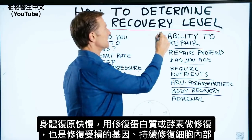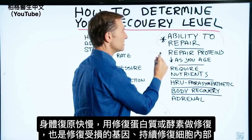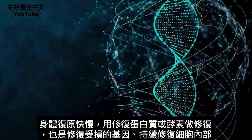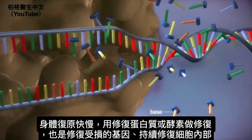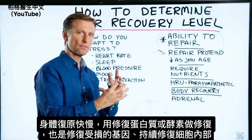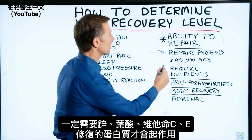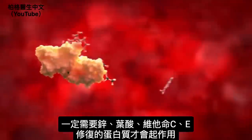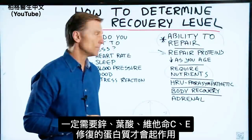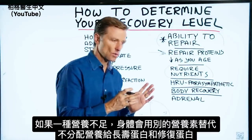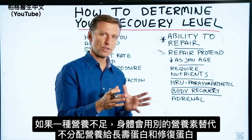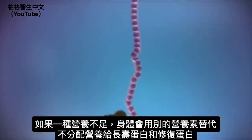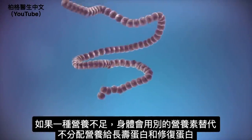Body recovery has to do with your ability to repair. There are repair proteins and enzymes in your body that do the work of repairing damage at the DNA level. Your body is constantly repairing those breaks in DNA and the damage that occurs to different parts of the machinery in your cells. These definitely require nutrients like zinc, folic acid, vitamin C, and vitamin E. If the body is deficient in a nutrient, it will ration that nutrient to just the most important functions and can neglect the longevity and repair proteins.